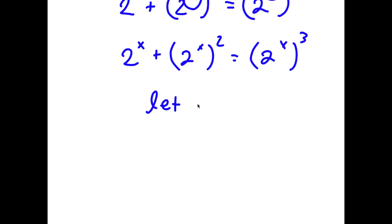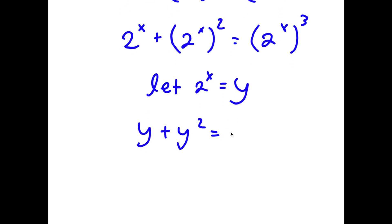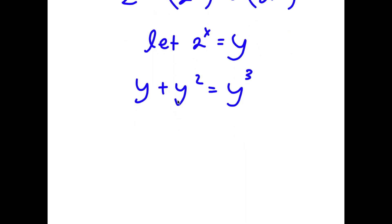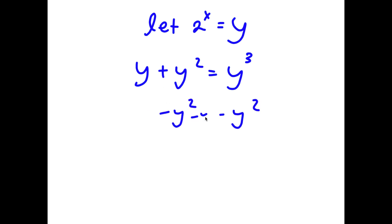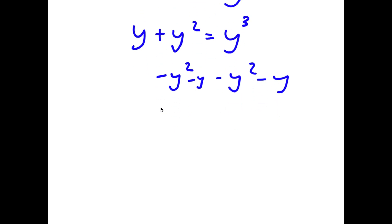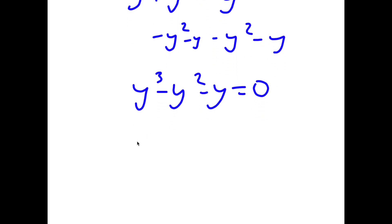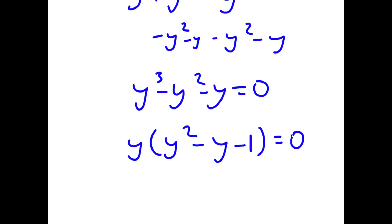Now I'm going to let 2 to the power of x equal the variable y. So now I have y plus y squared is equal to y to the power of 3. If I subtract y squared and negative y on both sides, I have y to the power of 3 minus y squared minus y is equal to 0. And now if I factor out y, I get y times y squared minus y minus 1 is equal to 0.